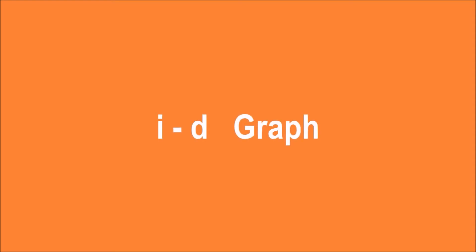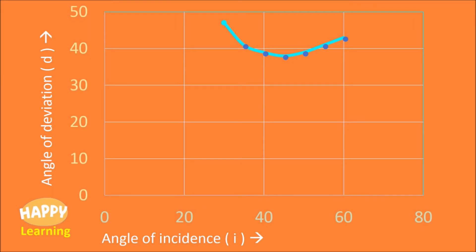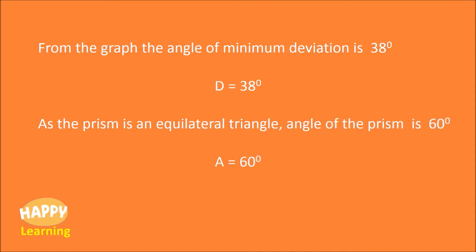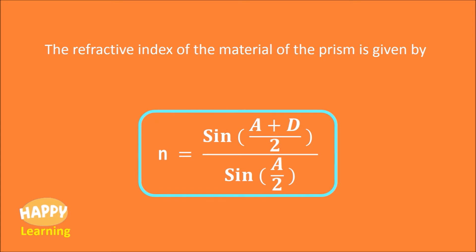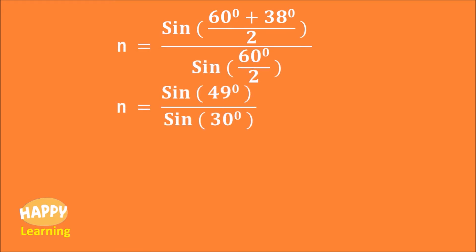Now let us draw the I-D graph, with angle of incidence I on the x-axis and angle of deviation D on the y-axis. The graph is in the shape of a V or U. At the bottom of this curve, the value is 38 degrees — this is the angle of minimum deviation. From the graph, the angle of minimum deviation D equals 38 degrees. As the prism is an equilateral triangle, the angle of the prism A equals 60 degrees. The refractive index is given by n = sin((A + D)/2) / sin(A/2). Substituting A = 60° and D = 38°, we get n = 1.5.